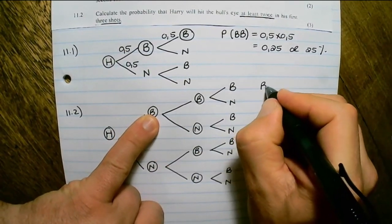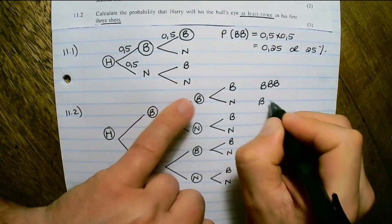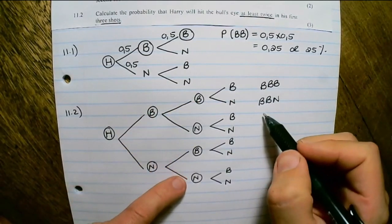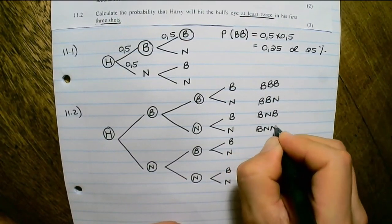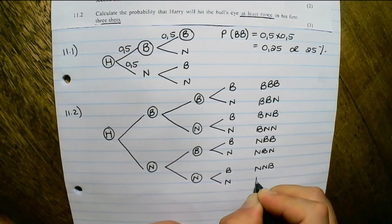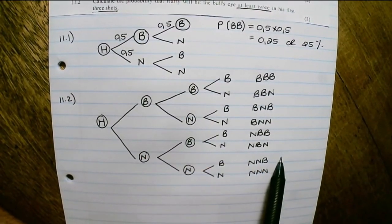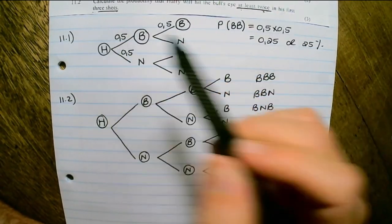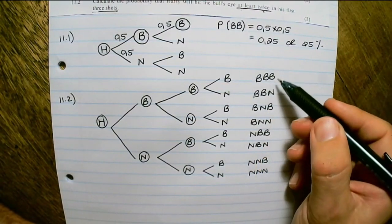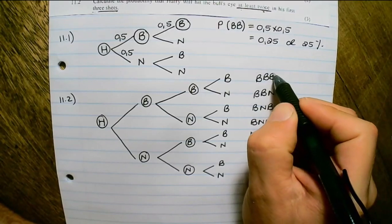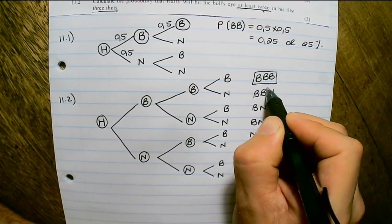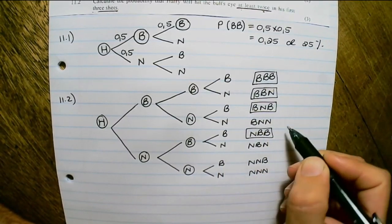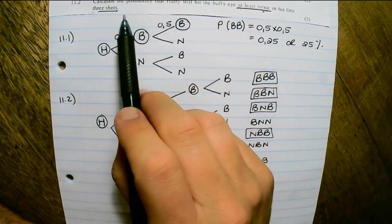Writing down all the outcomes, we get BBB or BBN, and continuing to follow all the trails gives us the full set of outcomes. Now that we have a full picture, we focus on hitting the bull's eye at least twice in three shots — outcomes with at least two B's. There are four such outcomes.